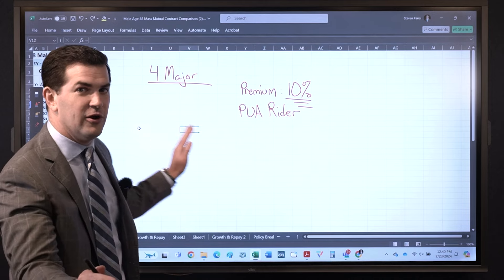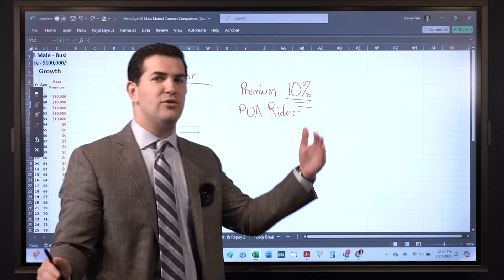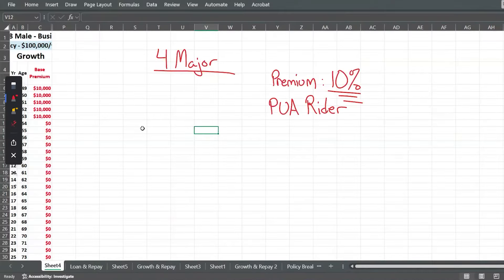So we know he's paying in $100,000 per year. Here's the premium at 10%: $10,000. Next we've got what is called a term insurance rider. The purpose of this is to add more death benefit to the policy, which he doesn't care about that.